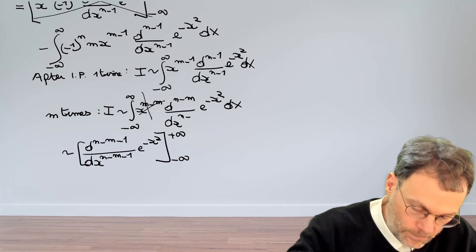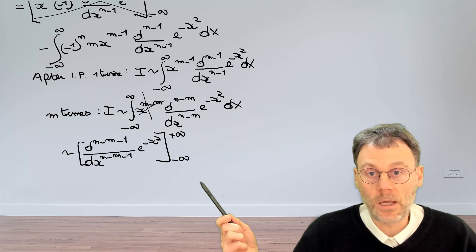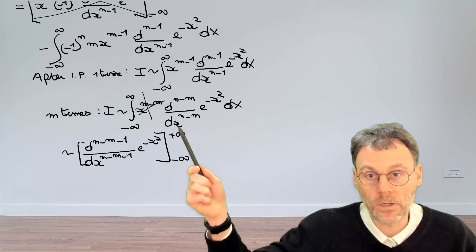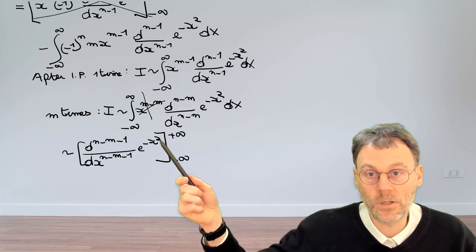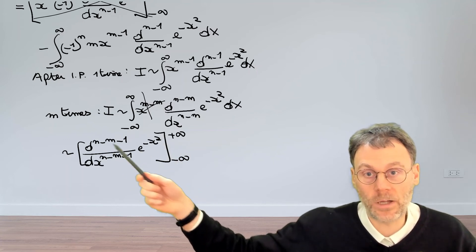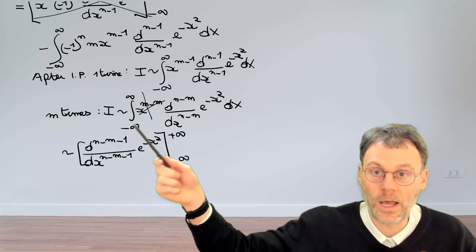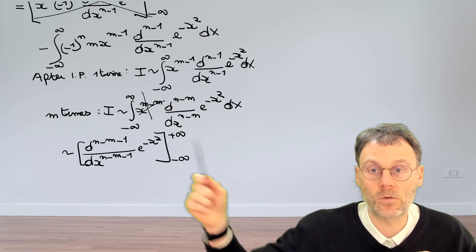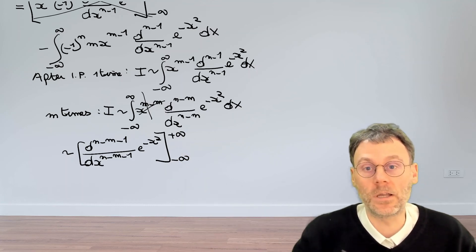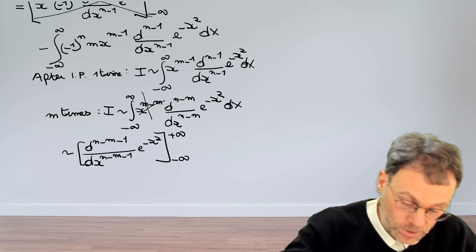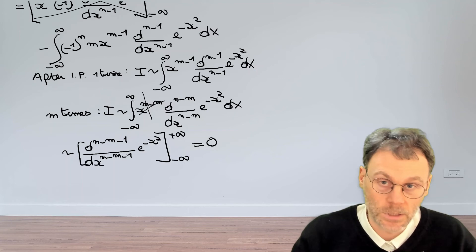And now, the same thing is true. We have here an exponential minus x squared. Every time we take the derivative, we will have some pre-factors which will form a polynomial, but every term will have this exponential minus x squared present. So if we evaluate this either at minus infinity or at plus infinity, the end result is always zero. This shows that the integral is zero.